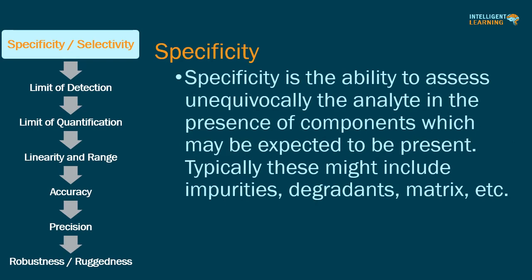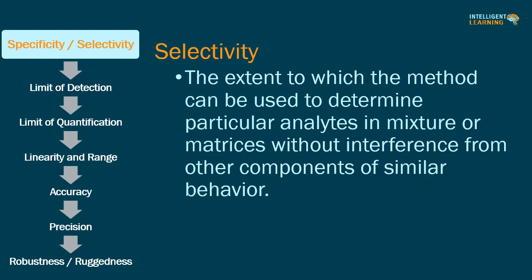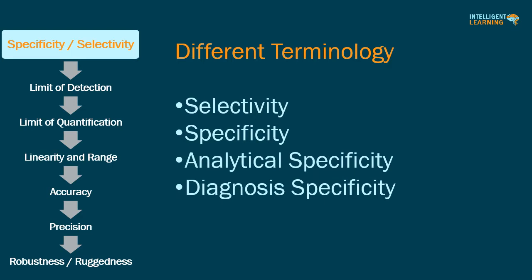As per ICH Q2 guidelines, specificity is defined as the ability to assess unequivocally the analyte in the presence of components which may be expected to be present — typically impurities, degradants, matrix, etc. As per IUPAC, selectivity is defined as the extent to which a method can be used to determine particular analytes in a mixture or matrix without interference from other components of similar behavior. While IUPAC recommends the term selectivity, the pharmaceutical sector uses the term specificity or analytical specificity.